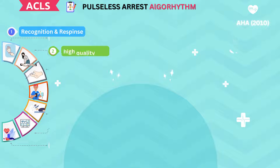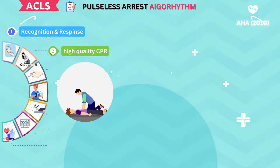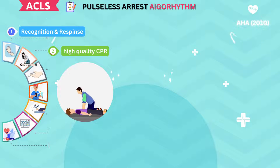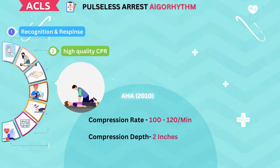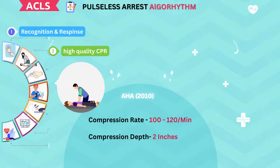Step 2 is High-Quality CPR. CPR is the cornerstone of ACLS, and it involves providing chest compressions and ventilations to maintain blood flow and oxygenation to the vital organs. The American Heart Association recommends a compression rate of at least 100 to 120 per minute and a depth of at least 2 inches. It is also essential to avoid interruptions in chest compressions, minimize ventilation time, and ensure proper chest recoil.